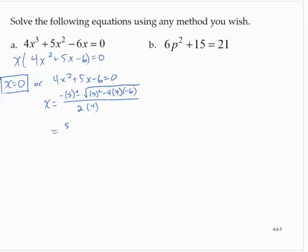So that would be -5 ± √(25 + 4 times 4 times 6, which is 96) over 8. That's -5 ± √121 over 8. -5 ± 11 over 8.